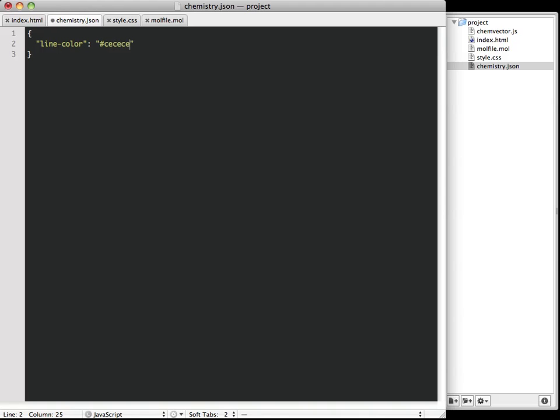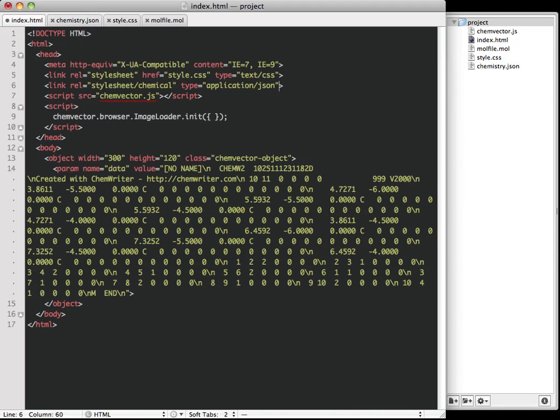Let's set it to a brighter shade of gray. I'll also reduce the line thickness. To get chemvector to recognize this style sheet, I add a link tag.